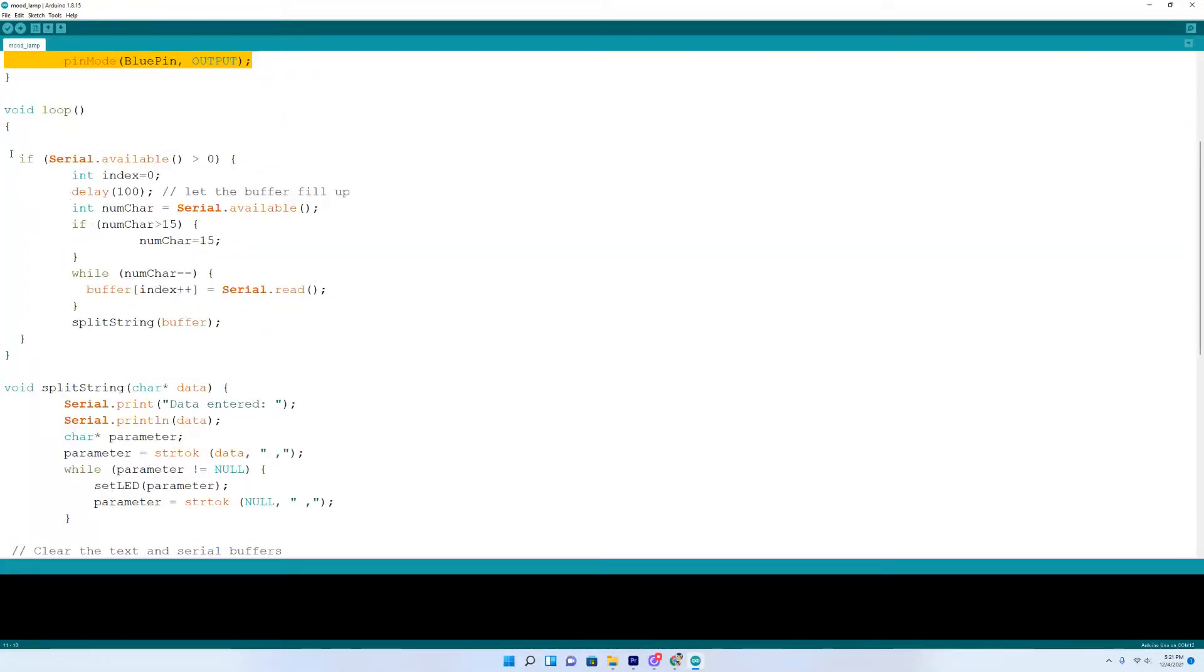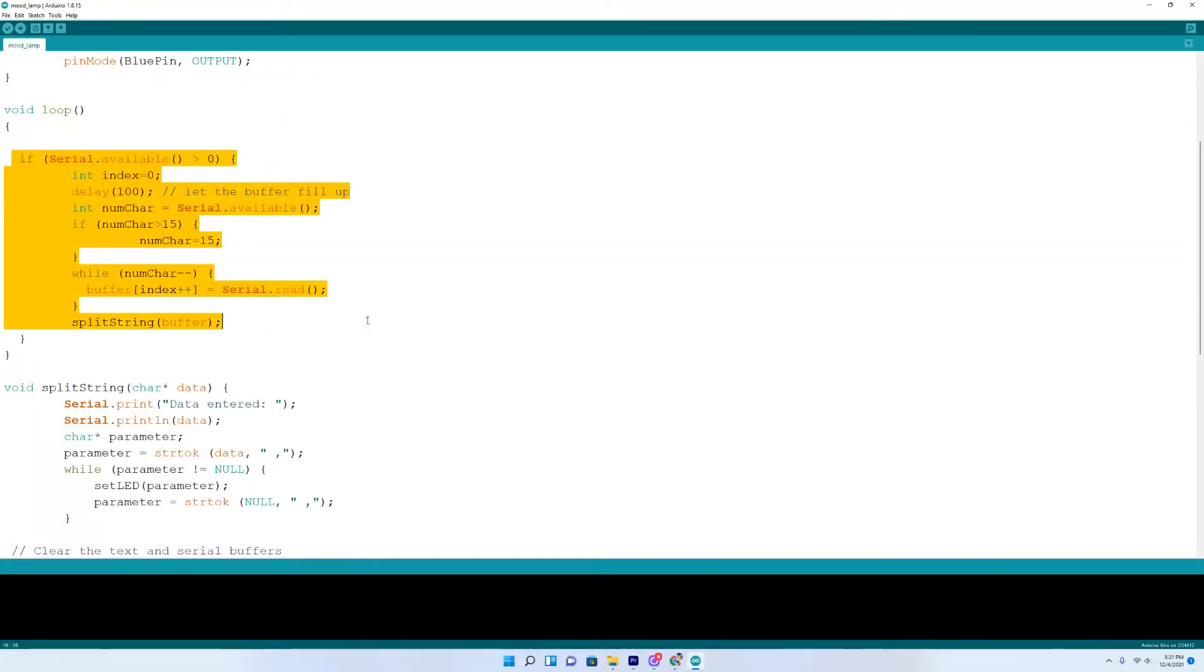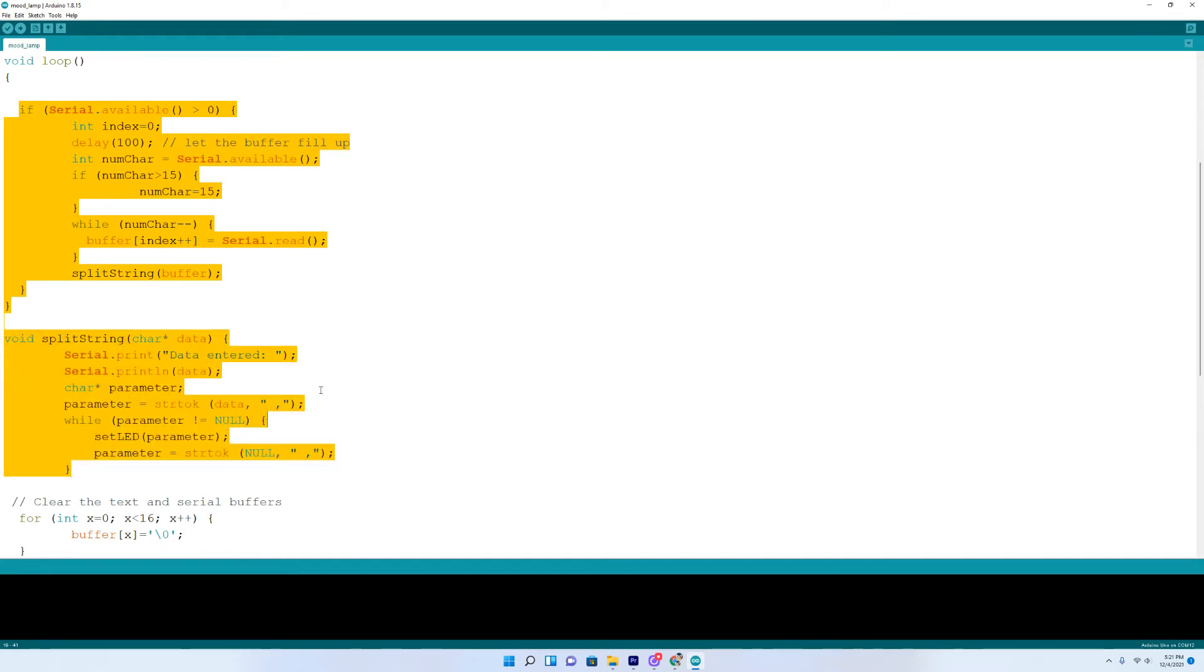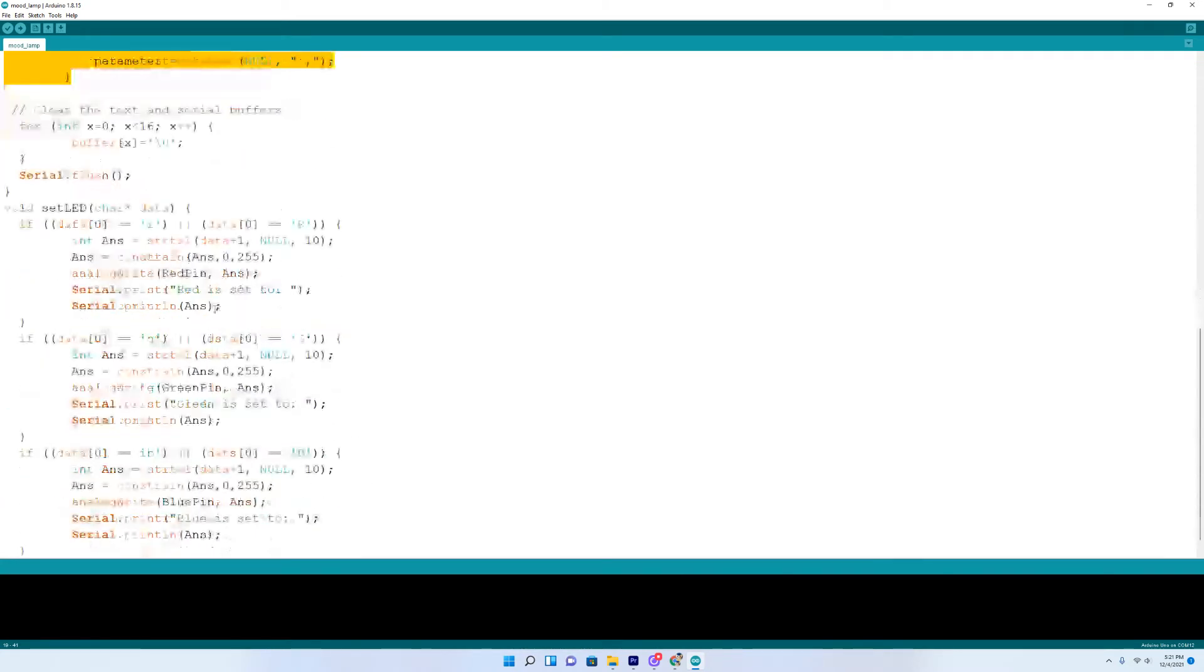Down here in the loop, this just takes care of the serial data coming in right here. And if you look down here, this is the part that may be most interesting to you. This is how we're going to set the colors for our mood lamp.